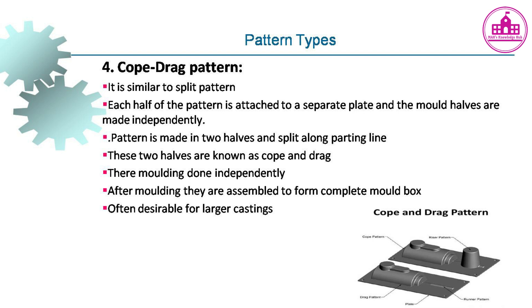Pattern Type 5 - Cope and drag pattern: Similar to a split pattern; each half of the pattern is attached to a separate plate and the mold halves are made independently. The pattern is made in two halves split along the parting line, known as cope and drag. Molding is done independently, and after molding they are assembled to form the complete mold box. Often desirable for larger castings.